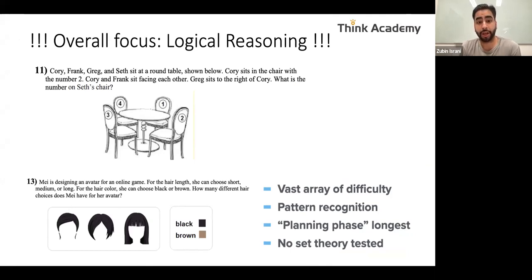This is where the innovation in their questions comes in. Let me read just one question out for you. We're not going to solve it. But just to give you an idea of what I'm talking about, Corey, Frank, Greg, Seth sit at a round table. Corey sits in a chair with number two. Corey and Frank sit facing each other. Greg sits right of Corey. What is the number on Seth's chair?